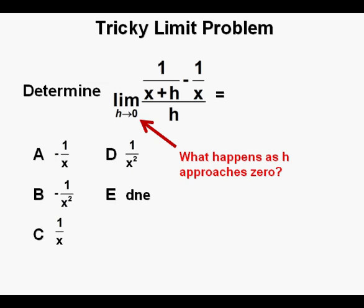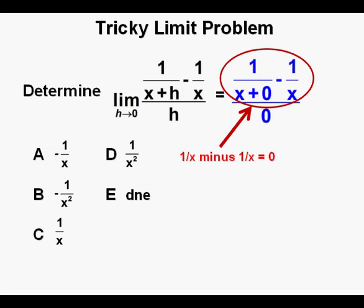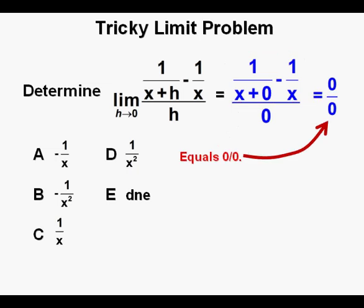In our initial evaluation, let's see what happens to this limit as h approaches 0. This is what we have in blue. In the numerator we have 1 over x minus 1 over x, and in the denominator we have 0. So as h approaches 0, this limit approaches 0 over 0.